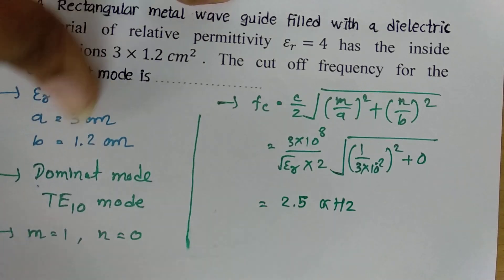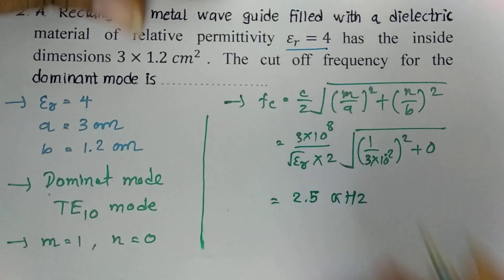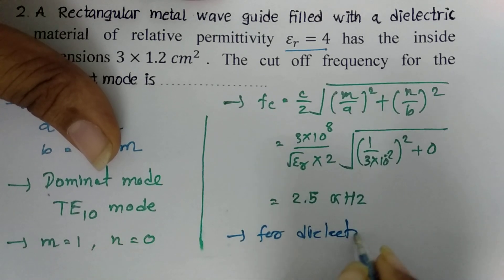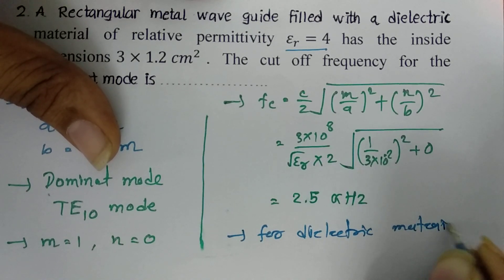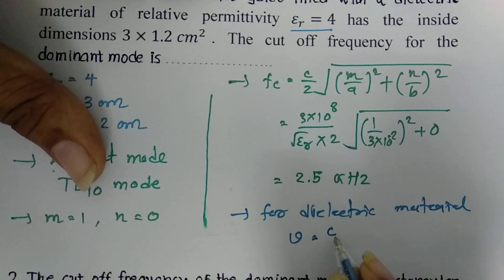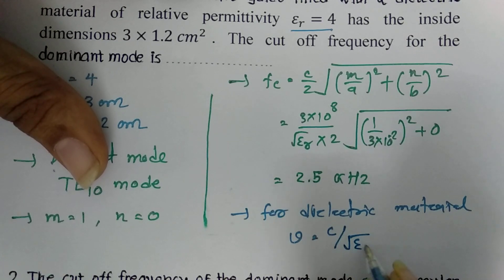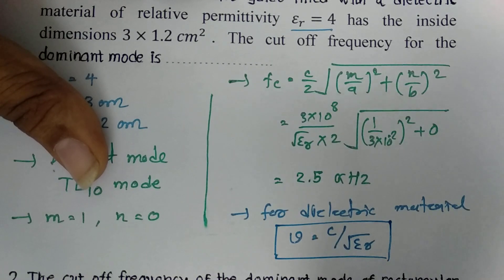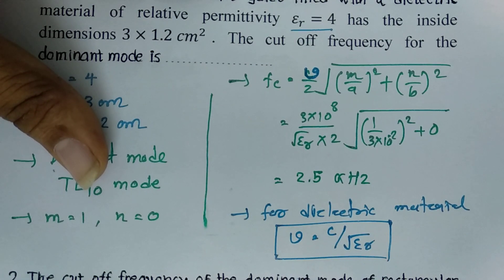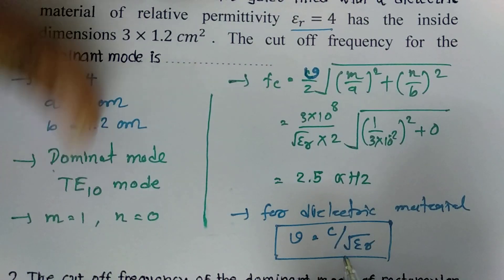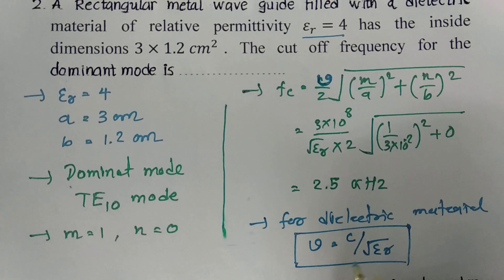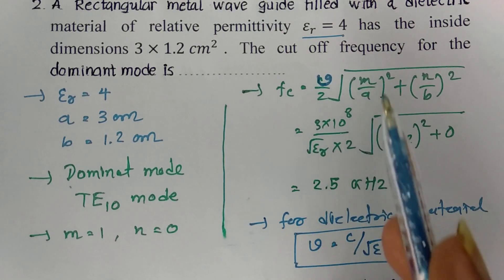An important note: when dielectric material is present, the velocity of light changes to v = C / √εr instead of free-space C. So in the cutoff frequency formula, we replace C with v = C / √εr. This must be considered whenever εr is given in the problem.